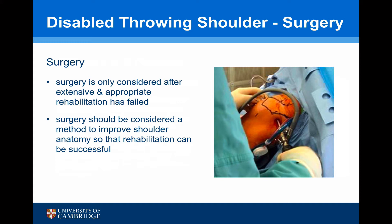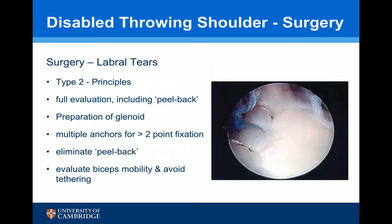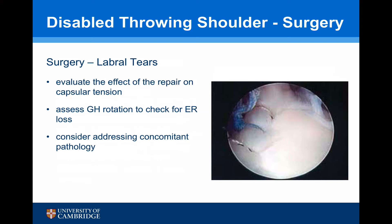With regards to surgery, this should really be considered as a last resort and should only be undertaken if extensive and appropriate rehabilitation has failed or has only been partially successful. Surgery should be considered as a method to improve shoulder anatomy so that rehabilitation can then be undertaken successfully. The commonest type of labral tear encountered is a type 2 tear. The principles of treating this are undertaking a full evaluation of the shoulder, looking for a peel-back. The glenoid should be prepared appropriately. Multiple anchors should be used so that there are at least two points of fixation. It's important at the end of the procedure to confirm that the peel-back has been eliminated and to evaluate biceps mobility and avoid tethering of the biceps. Having undertaken the repair, it's important to check the effect on capsular tension and confirm there is no loss of external rotation. It's also important to consider the concomitant pathology which one may or may not want to address at that time.